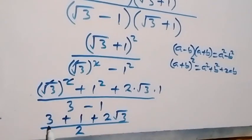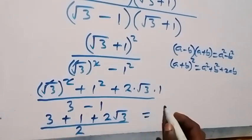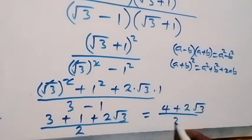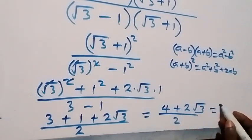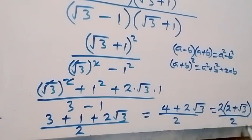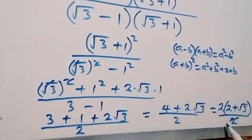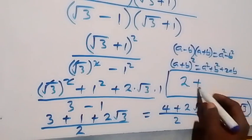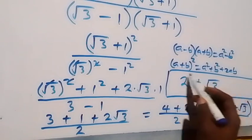So up here we have 3 plus 1 equals 4, plus 2 root 3, over 2. We factor 2 from the numerator: 2 times (2 plus root 3), over 2. The 2s cancel, and what we are left with is simply 2 plus root 3.